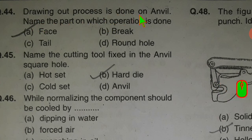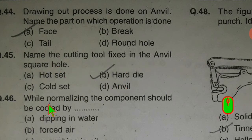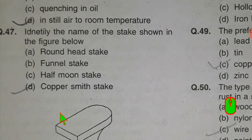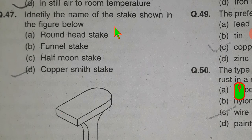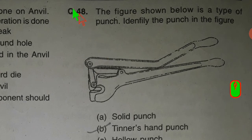The drawing-out process is done on the anvil. Name the part on which this operation is done: the face. Name the cutting tool fixed in the anvil square hole: the hard die. While normalizing, the component should be cooled in still air to room temperature. Identify the name of the stake shown in the figure below: coppersmith stake.